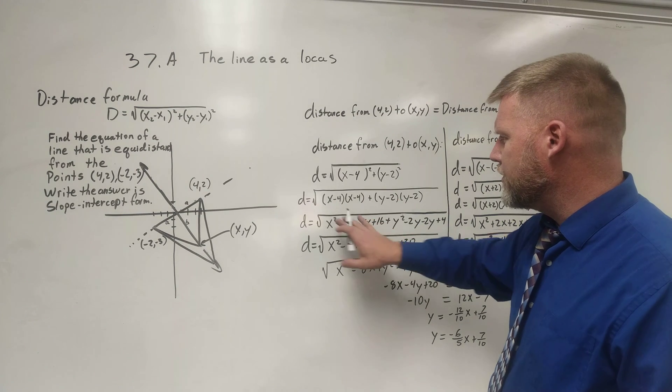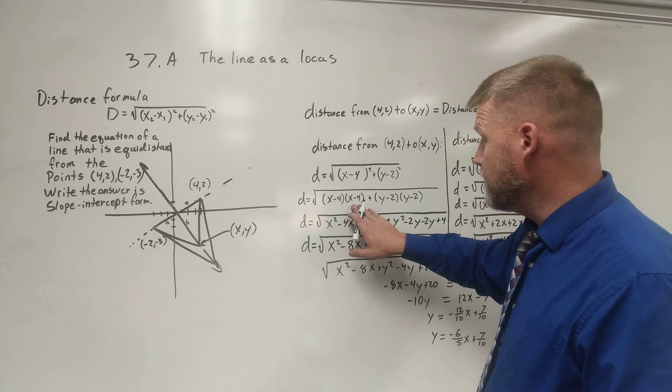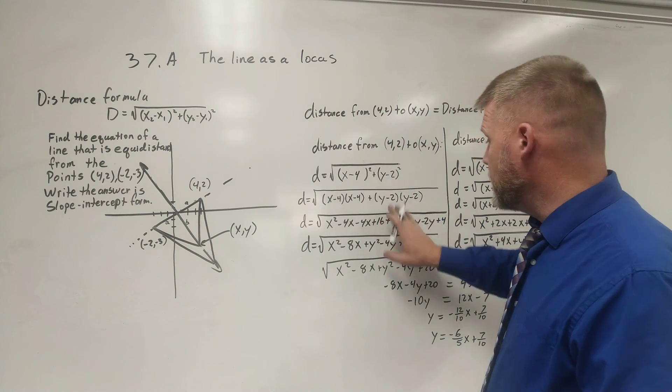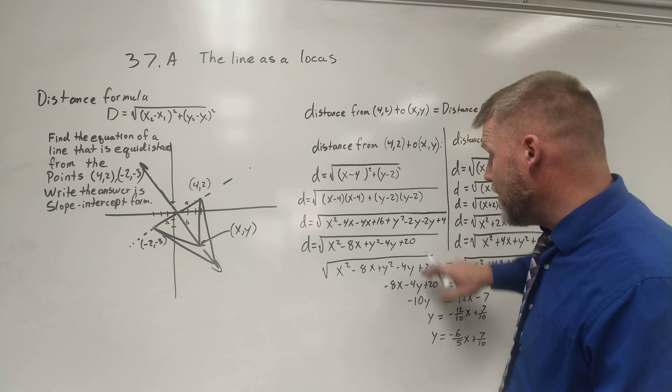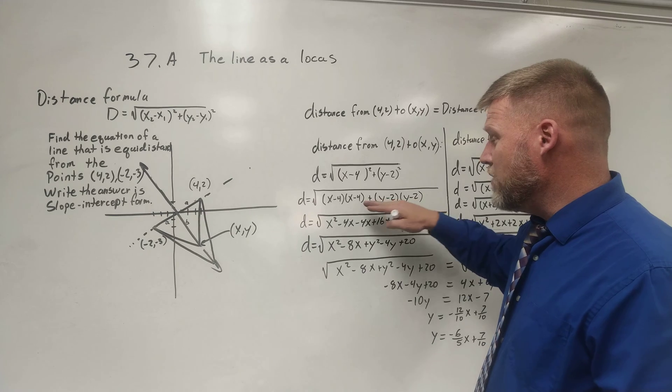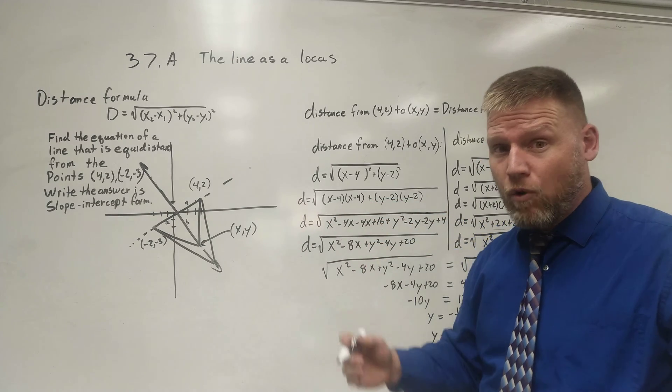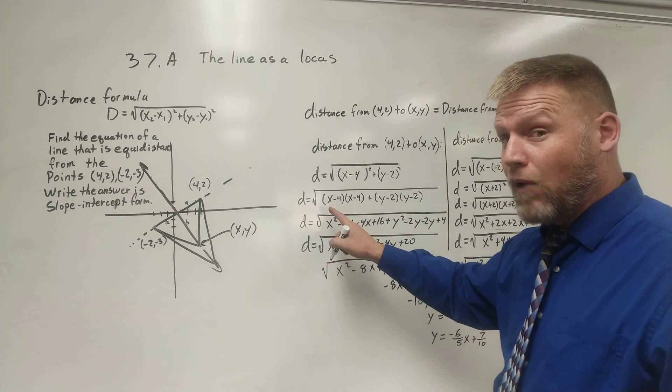x minus 4 squared is the same as x minus 4 times x minus 4, and y minus 2 squared is y minus 2, y minus 2. If you can do it in your head and you can skip down to the bottom, that's great. If you need to, go ahead and use either foil or left to right method.